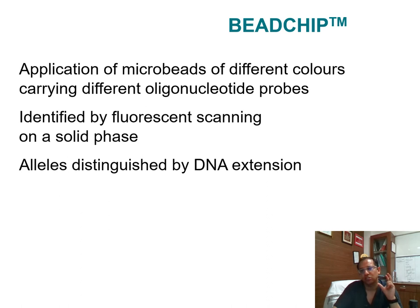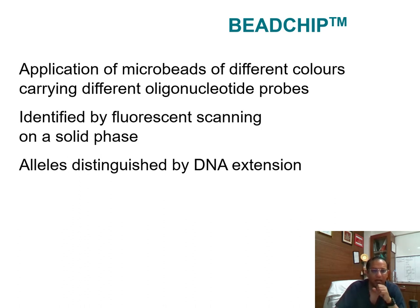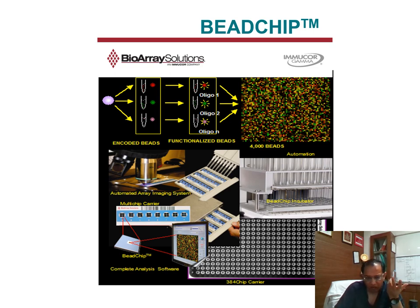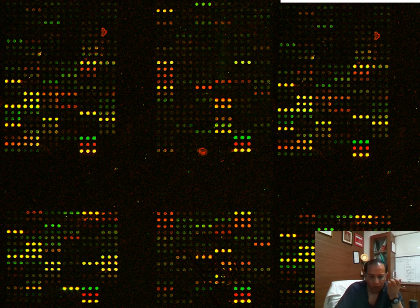This is the bead-chip technology used on microarrays. Microbeads are synthetic beads of different colors carrying different oligonucleotide probes. They are identified by fluorescent scanning on a solid phase, and alleles are distinguished by DNA extension. After encoding and functionalization, they are placed on a solid phase and analyzed through fluorescence on an automatic reader. A software reads the different color configurations and tells you which genes are positive or negative — it cannot practically be read with the naked eye.